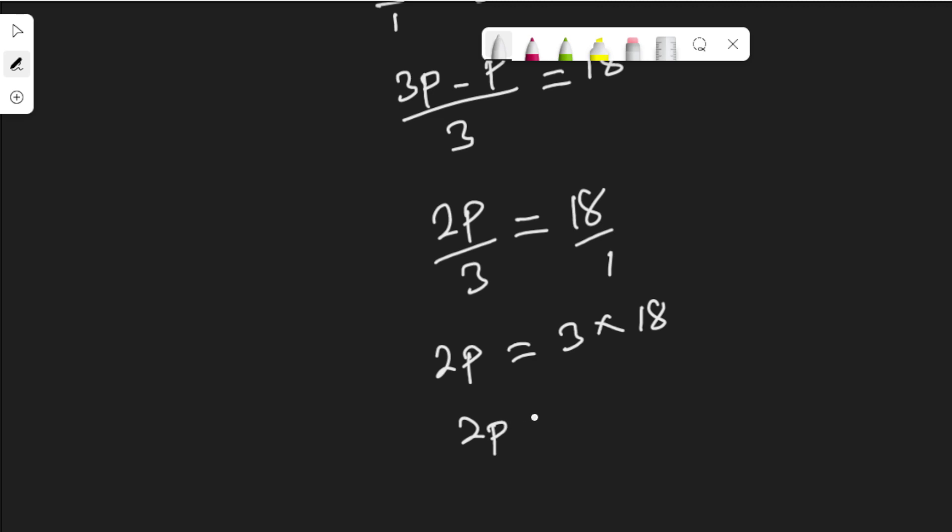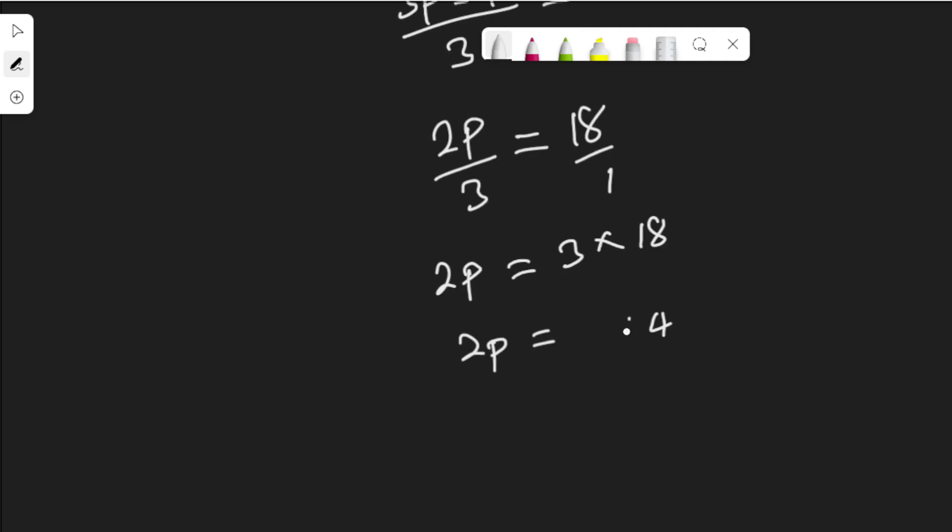3 times 18 is... 3 times 8 is 24, carry 2, 3 times 1 is 3 plus 2, that is 54. Dividing both sides by 2, p is 54 divided by 2 is 27.